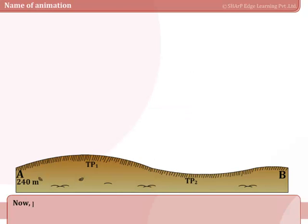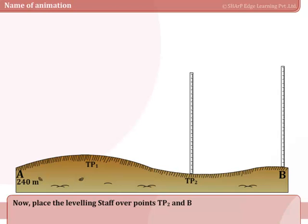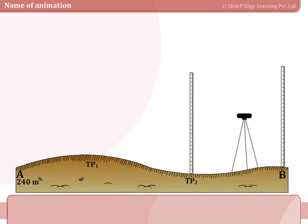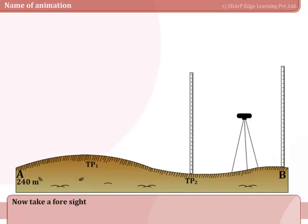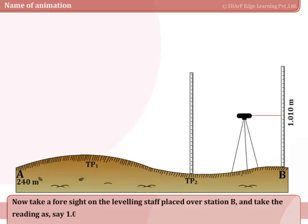Now place the leveling staff over points TP2 and B and set the instrument between these points. Level the instrument and focus the leveling staff over TP2 and note the reading, say 1.722 meters. Now take a foresight on the leveling staff placed over station B and take the reading as 1.010 meters.